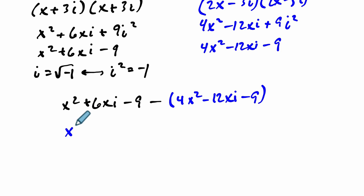We get, let me start over with color there, match this up. x squared plus 6xi minus 9 minus 4x squared plus 12xi plus 9. I'm reversing all those signs.